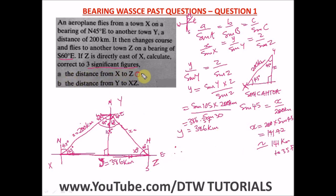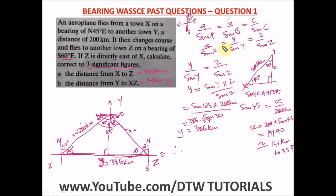So our answers for question one: the distance from X to Z is 386 kilometers, and the distance from Y to XZ is 141 kilometers. For theory questions, first sketch and interpret the bearing diagram on rough paper, then draw neatly with pencil and ruler, state your values and formula at every step — every step carries a mark — and don't forget to include units and approximate correctly.